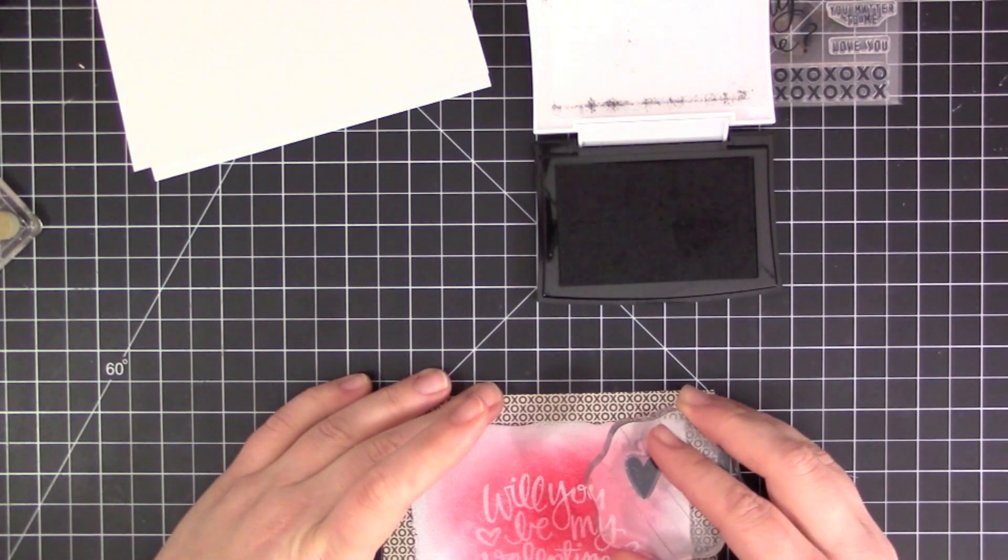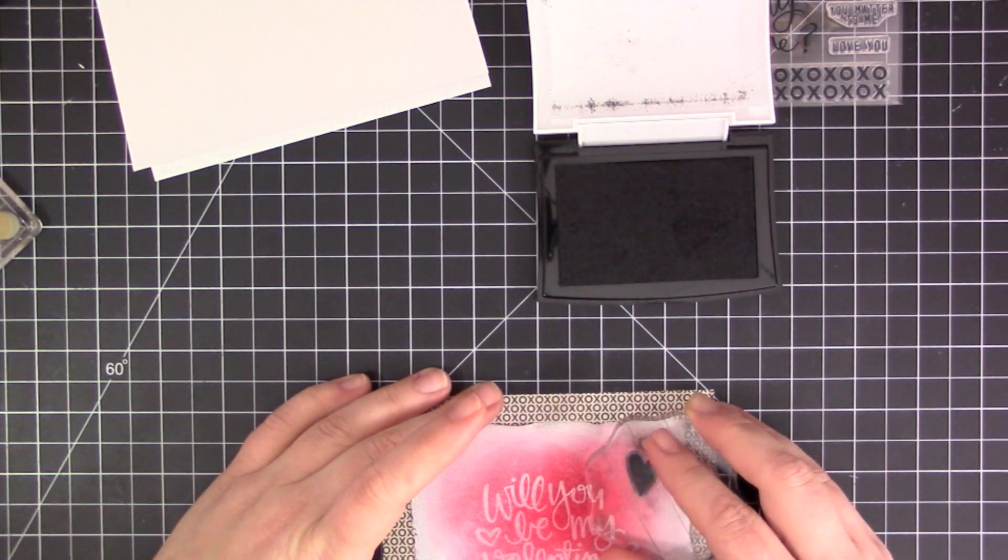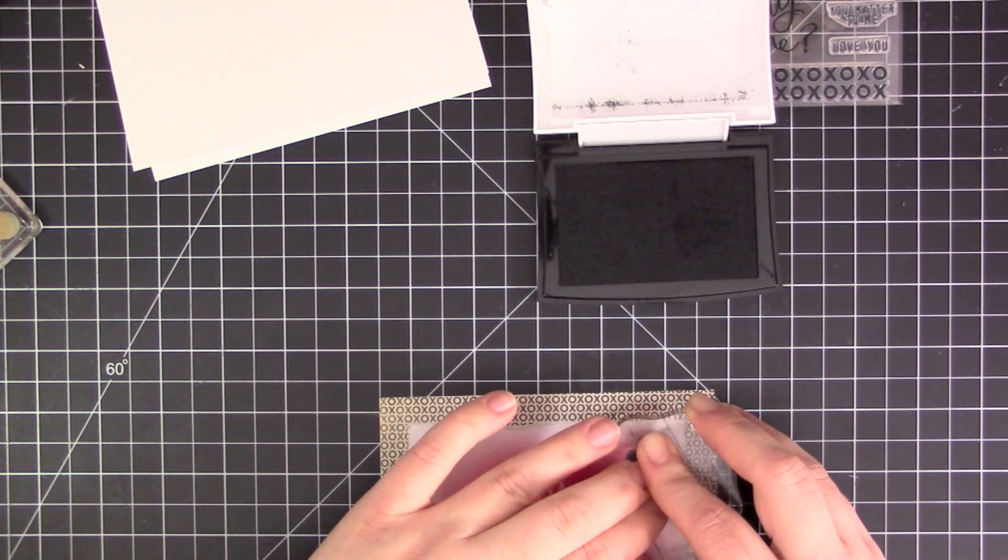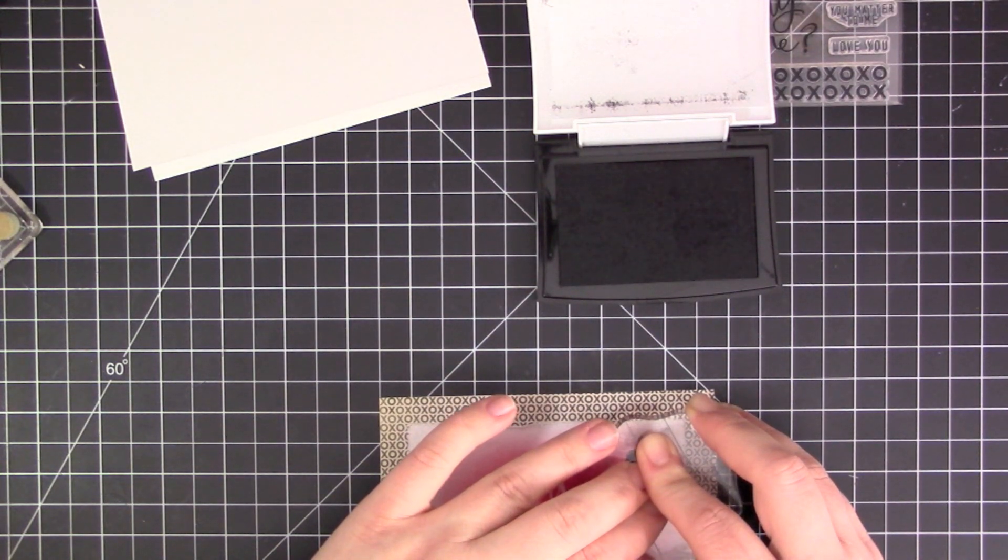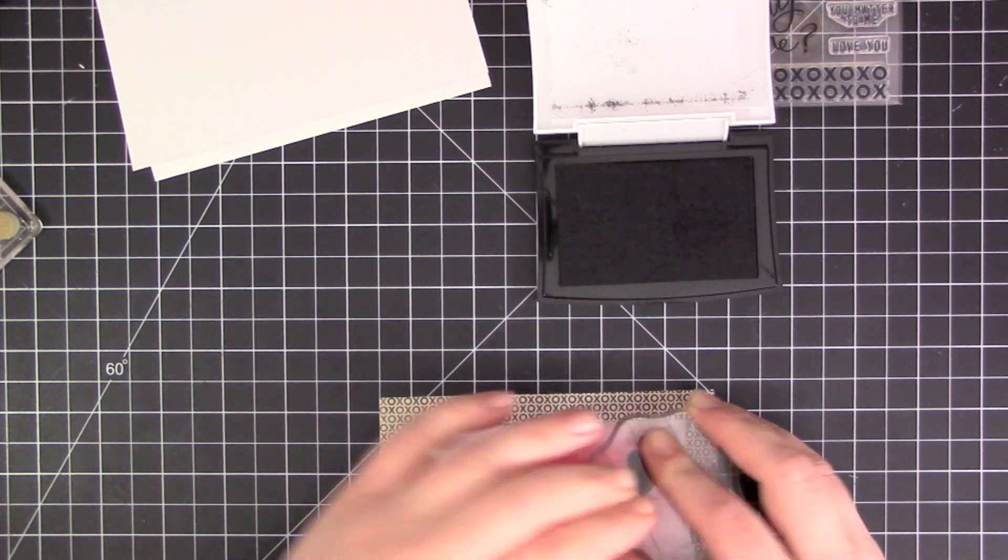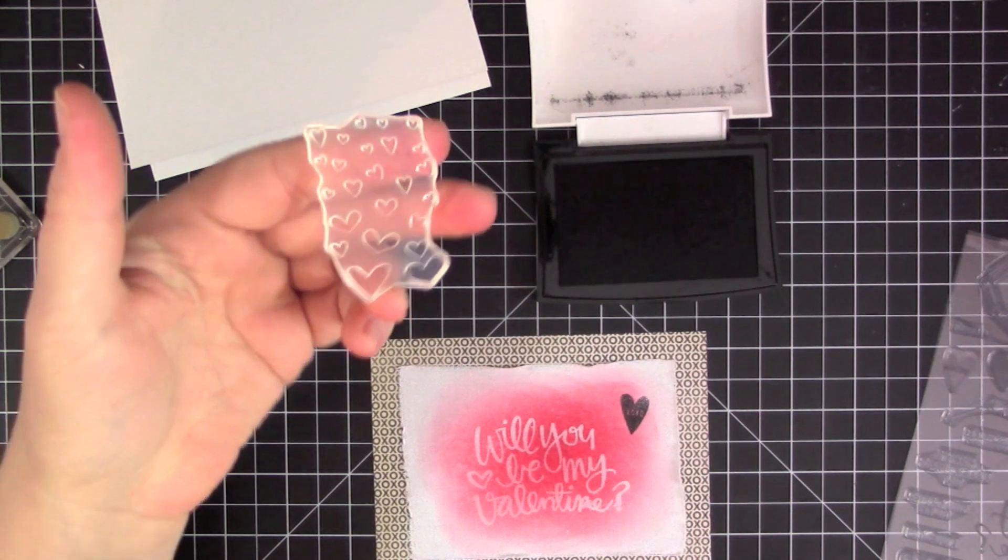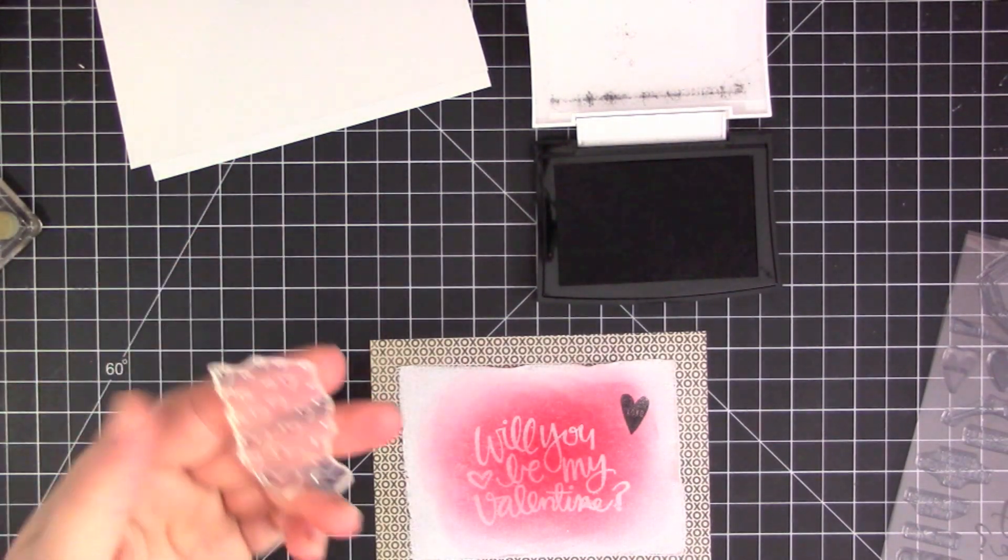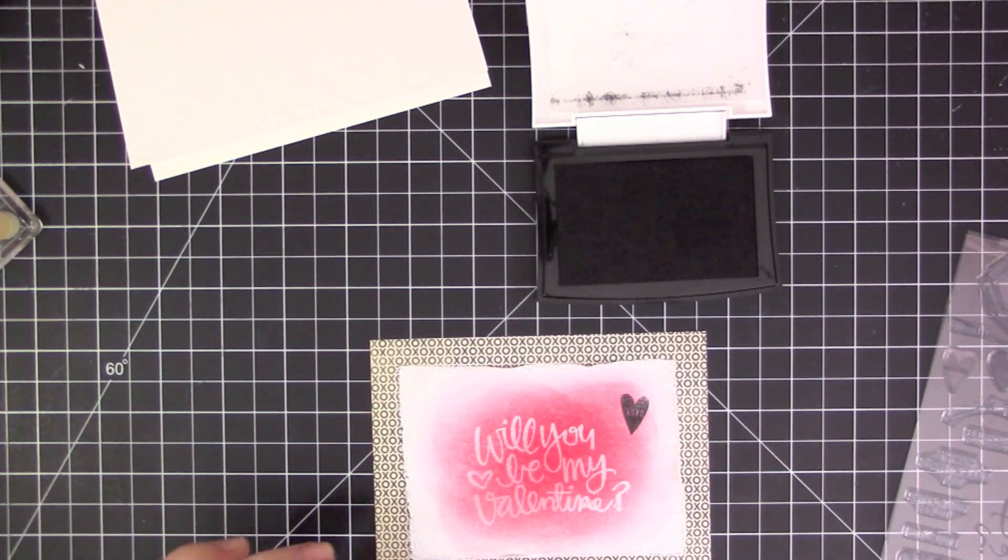I grabbed one of the heart stamps from the stamp set and I'm stamping that with VersaFine Black Onyx ink. This is a pigment ink, so you just want to let it sit for a little bit before you do too much with the canvas, because it will run a bit before it dries and smudge if you hit it with your fingers.